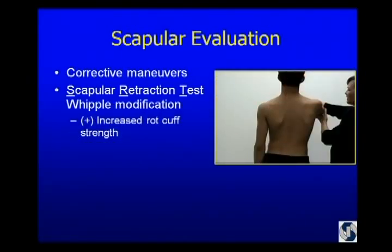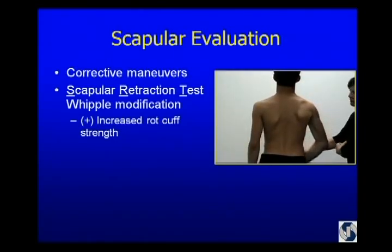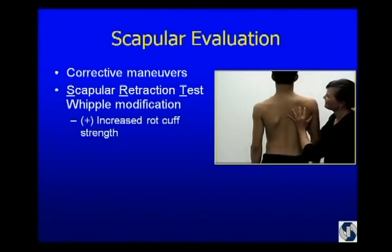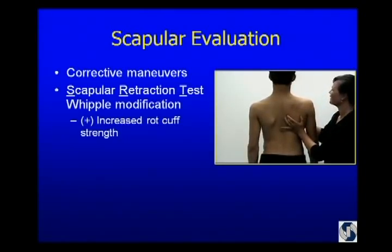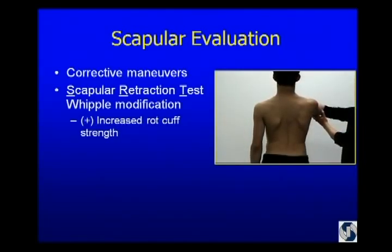Now you can look at this from the back. The Whipple maneuver — Terry Whipple's test for anterior supraspinatus dysfunction — involves bringing the arm across the body, and then having the patient demonstrate pain and weakness on resisted elevation. Here it is from the back on that young thrower: significant winging, significant weakness of his cuff. But now all you have to do is cue him to fire his lower trap, and he can hold it in position with improved strength.